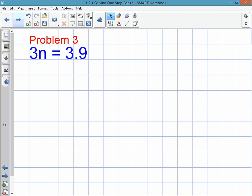Problem 3 is an example of multiplication. The 3 and the n are being multiplied. And so to get rid of a multiplication or do the opposite of multiplication, you would divide both sides by 3 because this 3 and this 3 cancel. You get n, what you do to one side, you do to the other side. 3.9 divided by 3 is 1.3.